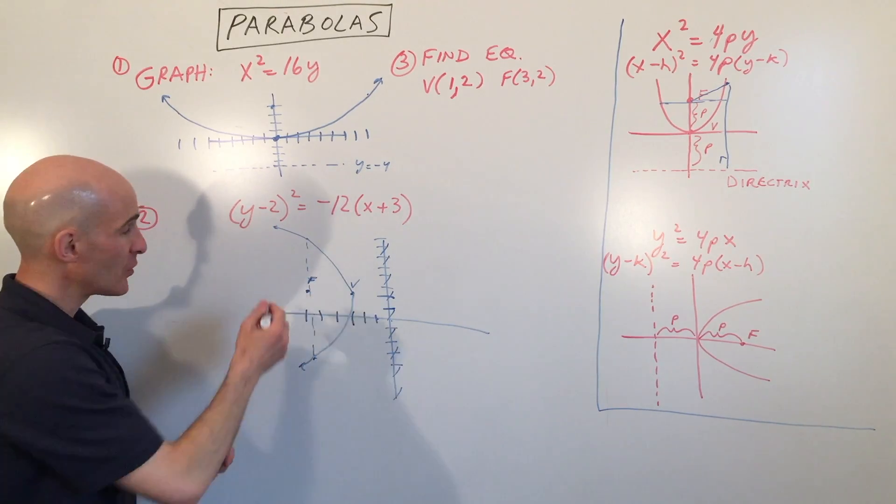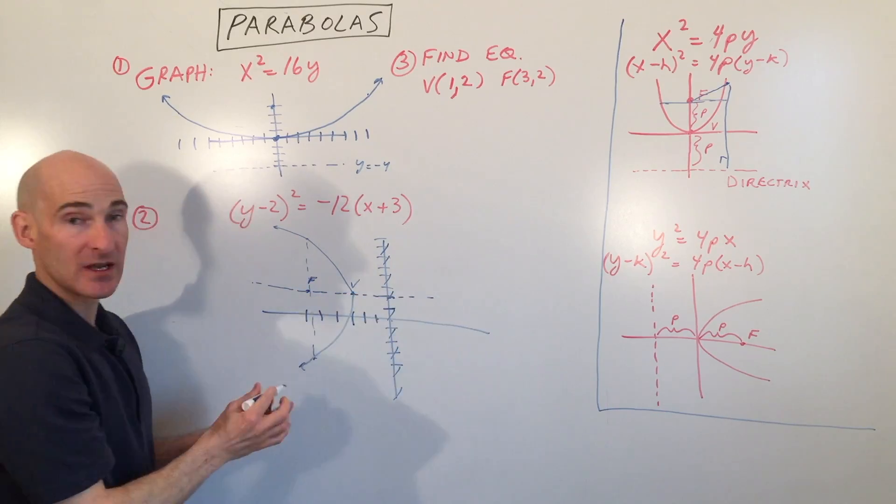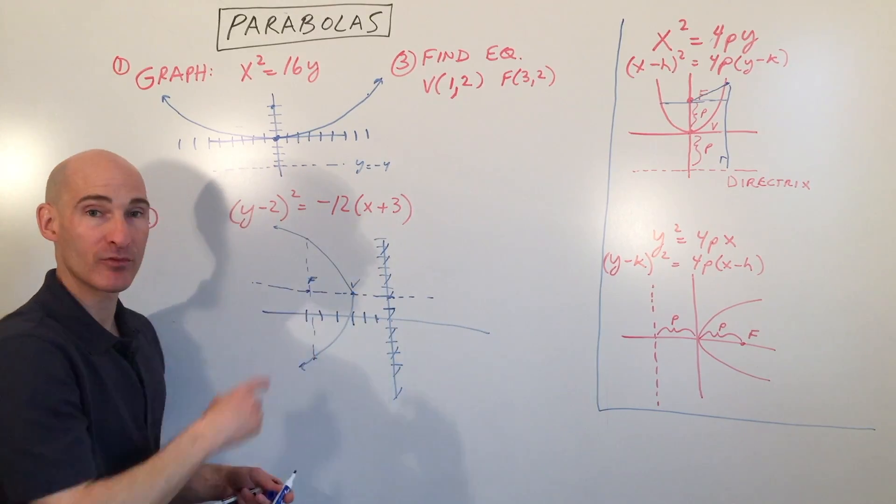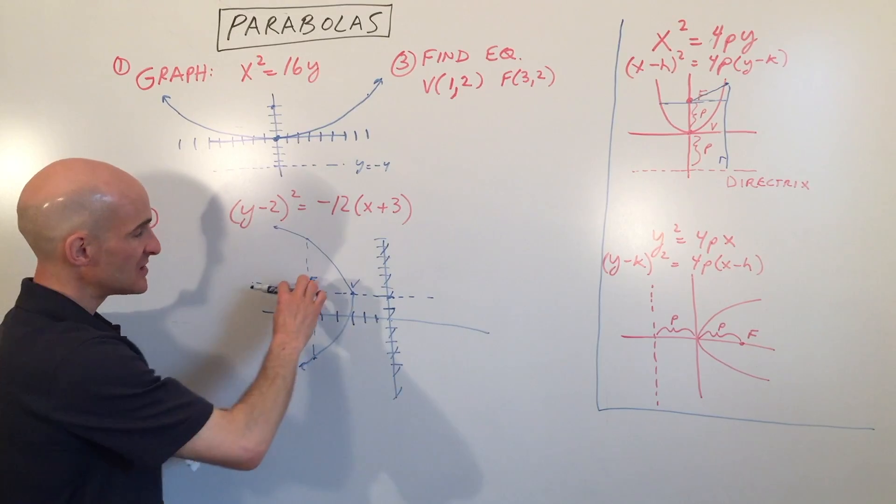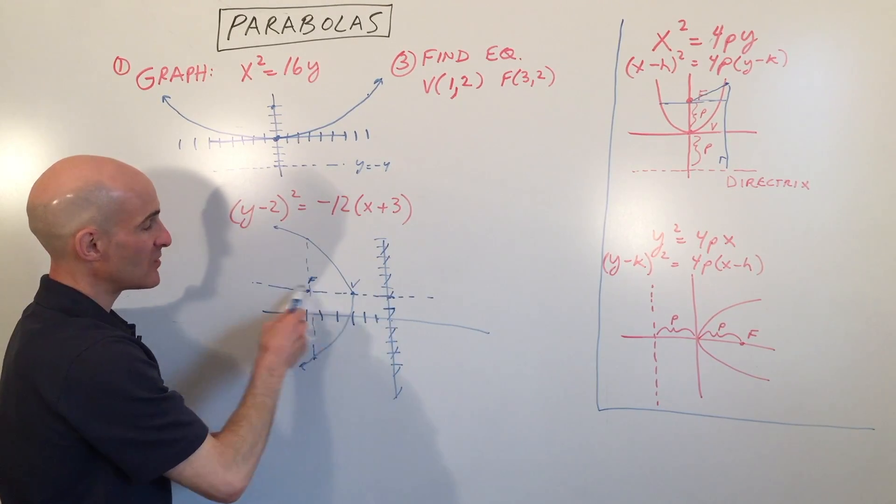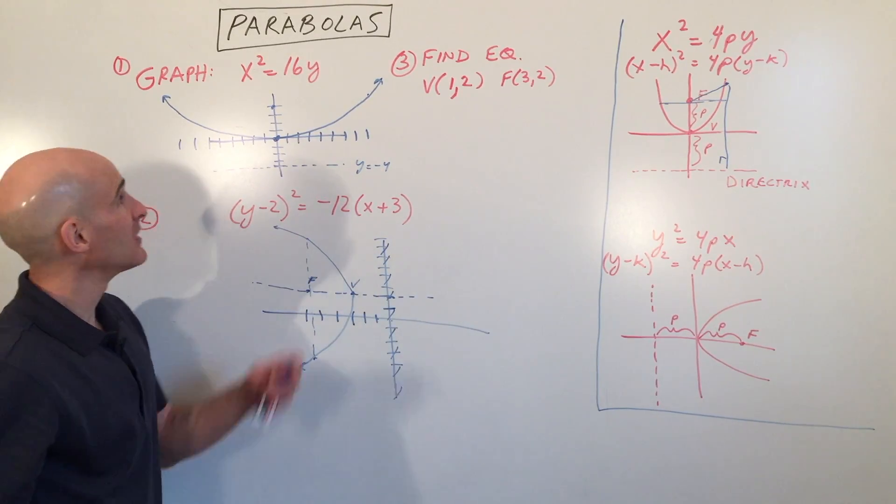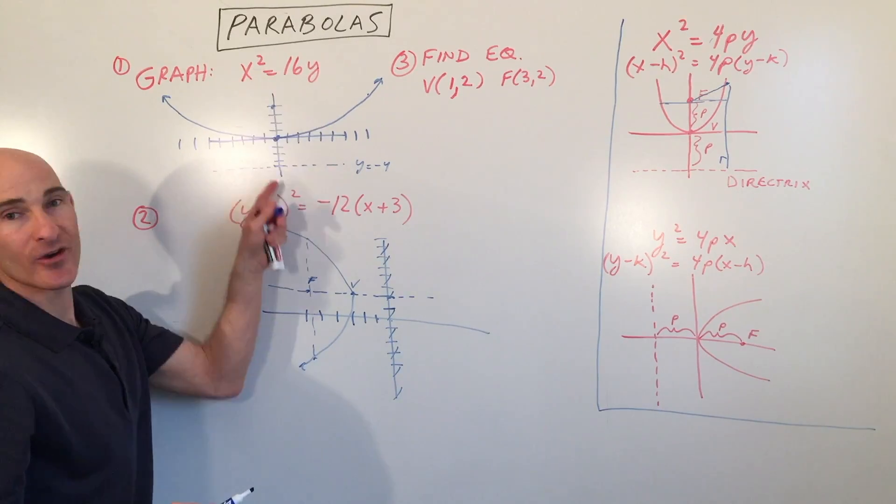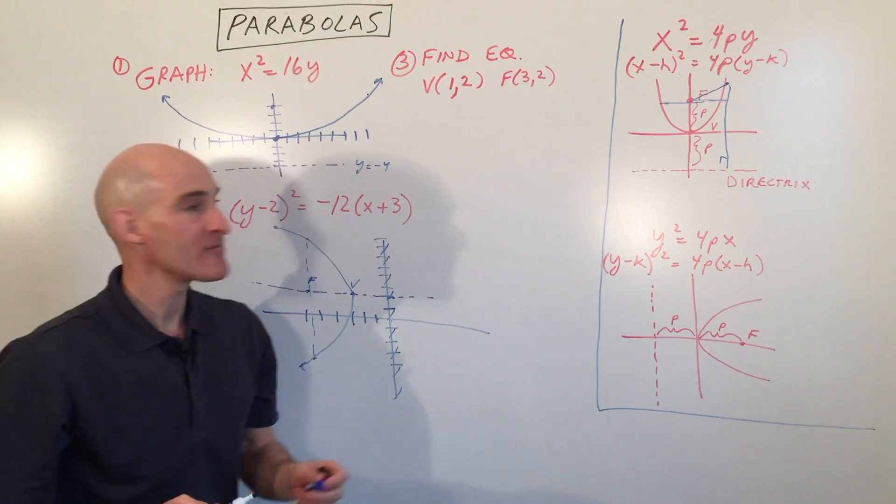Sometimes they'll ask you for the equation of the axis of symmetry. Meaning if you fold it over that line, the parabola will match to itself. So you can see that's a horizontal line. In this case, it's going to be y = 2. And this one here, it's going to be x = 0.